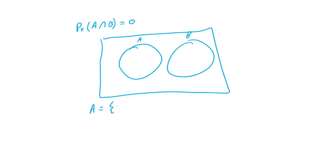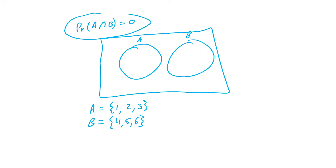Another way to show this would be if A is a set of numbers being one, two, three, and B is another set of numbers being four, five and six. There is no overlap between the two, so we say that they are mutually exclusive. To prove something's mutually exclusive, we just need to show that the probability of their intersection is equal to zero.